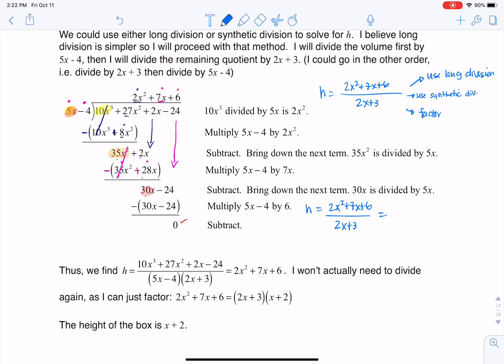I'm going to factor for reals now, 2x and x, and then I'm going to go 3 and 2 that way, plus signs on both. I'm not going to forget that I had a 2x plus 3 here. So because I can cancel these, that leaves me with x plus 2, and that's got to be the height.